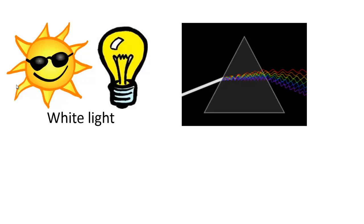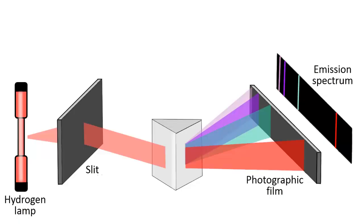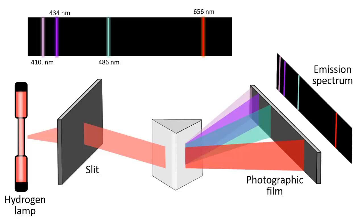By now you probably know that passing light through a prism will separate the light into its constituent wavelengths. But unlike the continuous white light spectrum that is observed from the sun or a light bulb, the spectrum of light given off by atoms, the so-called emission spectrum, is composed of specific bright lines with dark spots in between.